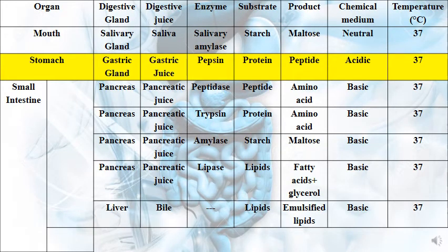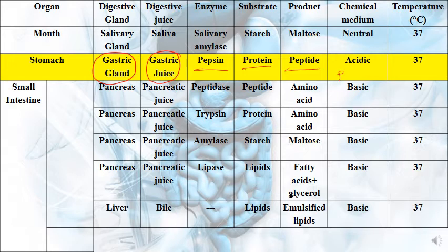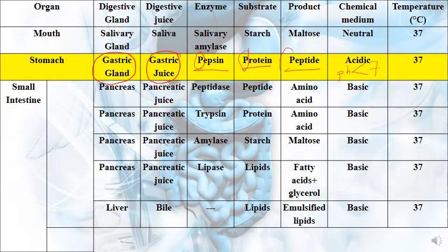Inside the stomach, we have a special gland called the gastric gland. It secretes a juice called gastric juice, which contains the enzyme pepsin. Pepsin works on protein to give peptide, and the medium is acidic — pH less than 7 — at a temperature of 37 degrees Celsius. Remember the triple P mnemonic: Pepsin, Protein, Peptide. Protein is the complex form, while peptide is the intermediate form.